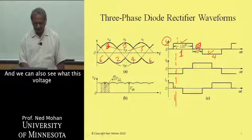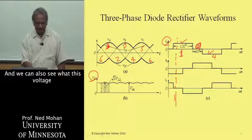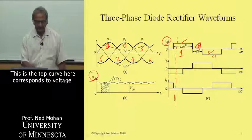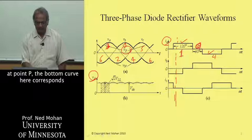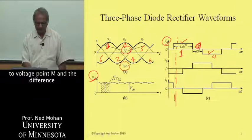We can also see what this voltage on the DC side would look like. The top curve here corresponds to voltage at point P. The bottom curve here corresponds to voltage at point N.